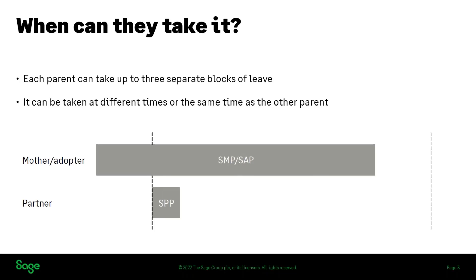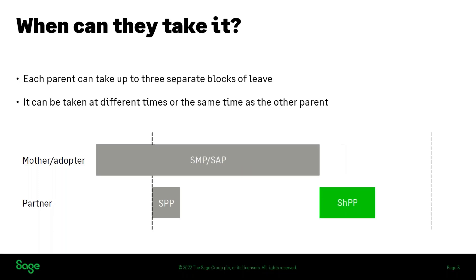One example shows a mother or adopter taking their full 39 weeks of maternity or adoption pay with a partner taking two weeks of paternity pay after the baby was born. But if they decide to use shared parental leave and pay, the maternity pay would be cut short. In the example we looked at, 33 weeks of SMP were taken, making the remaining six weeks available to be shared — that might just go straight to the partner, which is how it worked when it was additional statutory paternity pay.